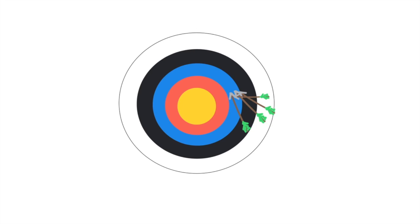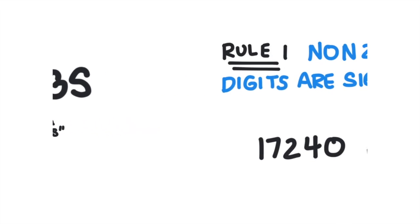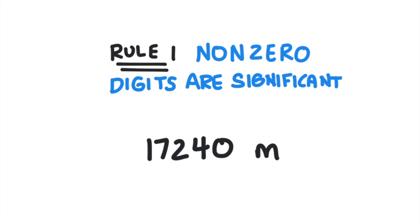So how do you know how precise a number is? It's all about reporting the digits we are certain about. The digits we are certain about are called significant digits or significant figures. There are a set of rules to determine if a number is significant or not. Number one, non-zero digits are always significant. The rest of the rules determine if a zero is significant or not.